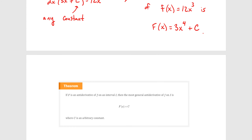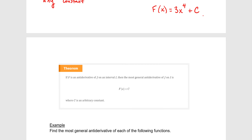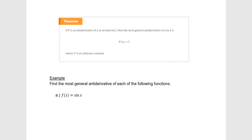This brings us to the general theorem: if F is the antiderivative of little f, then the most general antiderivative is F plus C, where C is an arbitrary constant — meaning it could be essentially any constant.